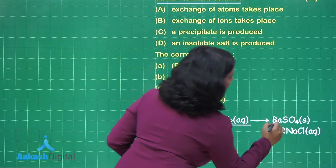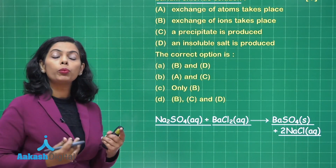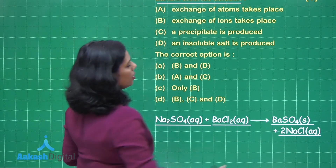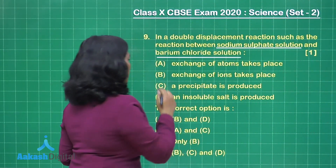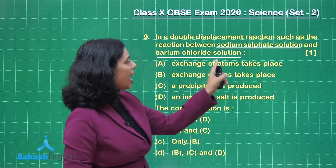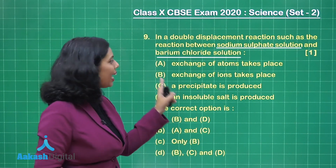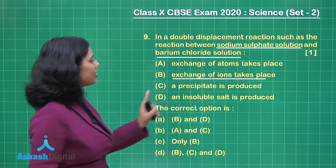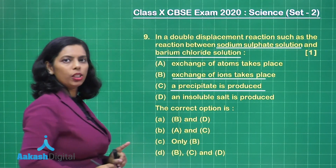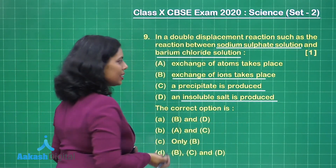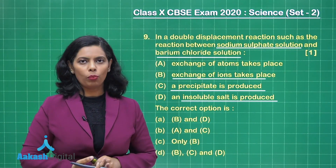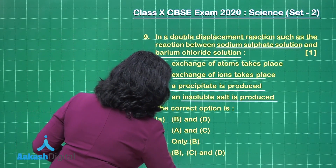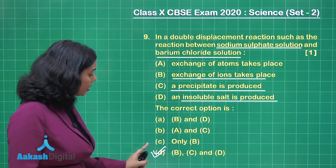What happens? Barium sulfate is formed and sodium chloride is formed. Barium sulfate is basically the white colored precipitate formed during the reaction. Now checking the parts A, B, C and D — the first part says exchange of atoms takes place. That is not correct; here exchange of ions takes place. Further, a precipitate is produced — very true. An insoluble salt is produced — yes, barium sulfate is an insoluble salt whose precipitate is being formed. So on the basis of that, option D is the correct option.